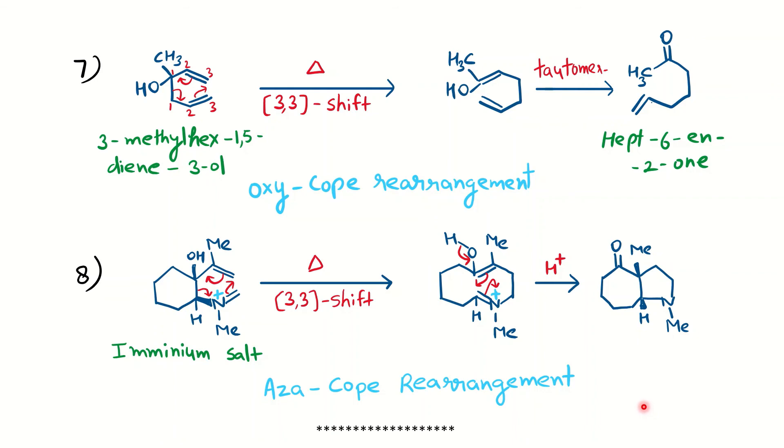In this way you can find out cope, oxy-cope, and aza-cope rearrangement easily. I hope you understood it. We'll see in the next video about Claisen rearrangement. Till then, happy learning.